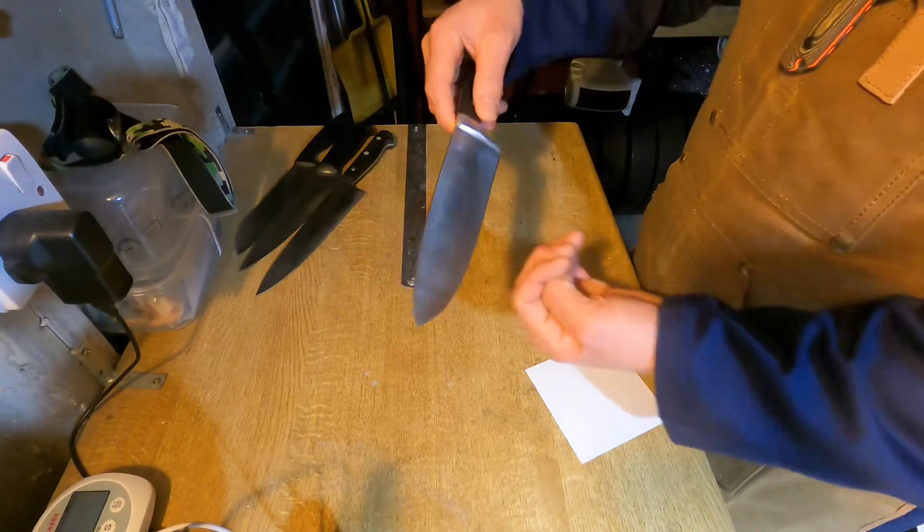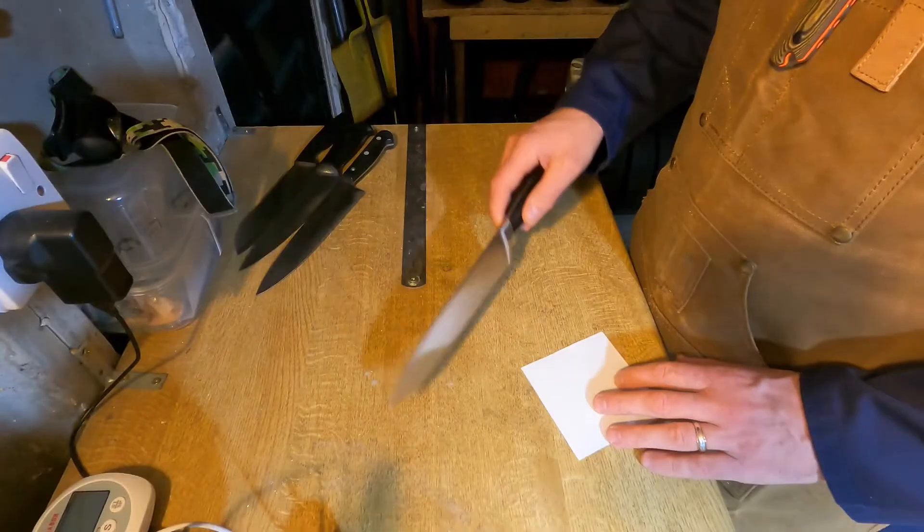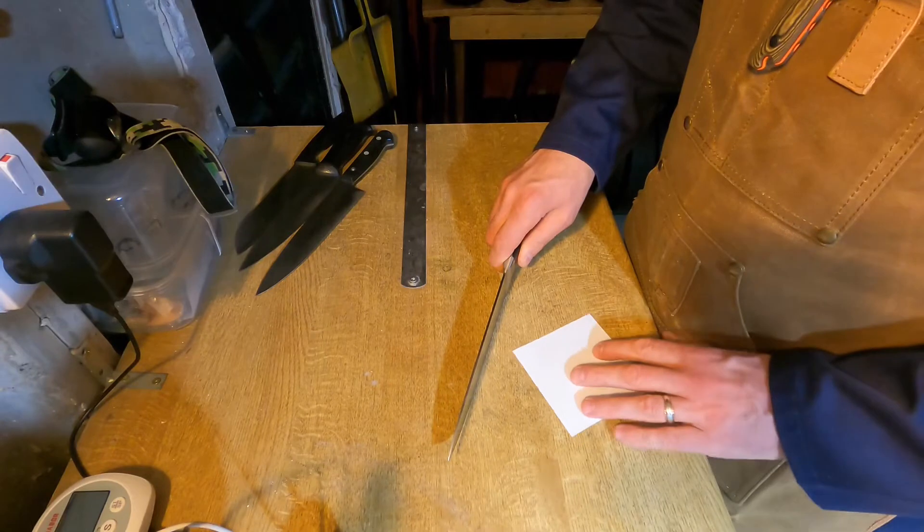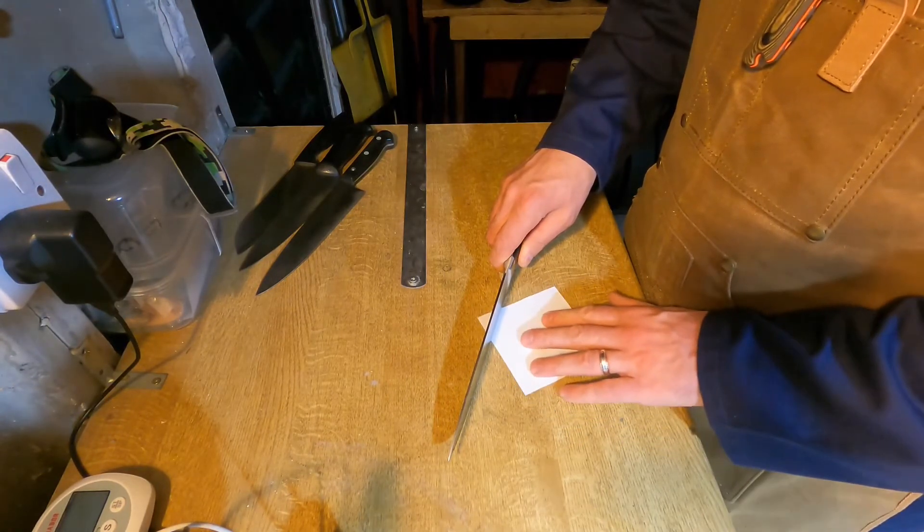You can see that with a backlight holding it down on a flat surface, but here's a simple test that everybody can do at home. Take the knife that you want to check, put it flat down on a surface